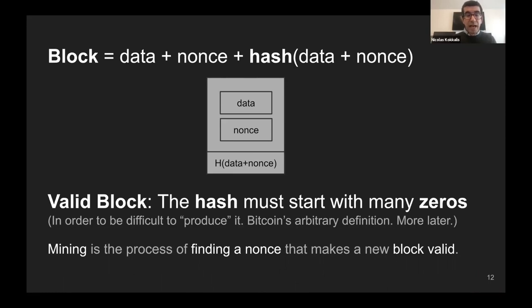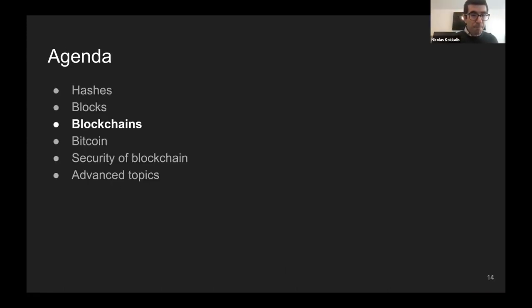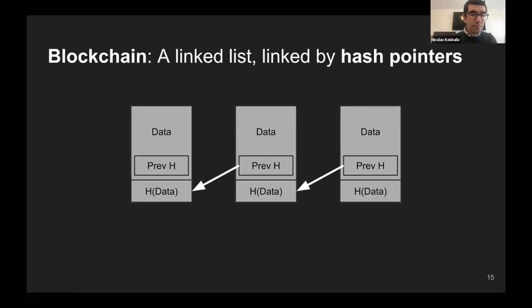A valid hash starts with a lot of zeros, which is pretty unlikely to find. This creates a decentralized lottery where many miners try different nonces until one of them, every 10 minutes, wins by finding a hash that produces a block starting with many zeros. Each block is chained to the previous one by storing a copy of the previous block's hash into the current block — that's how chaining is achieved.